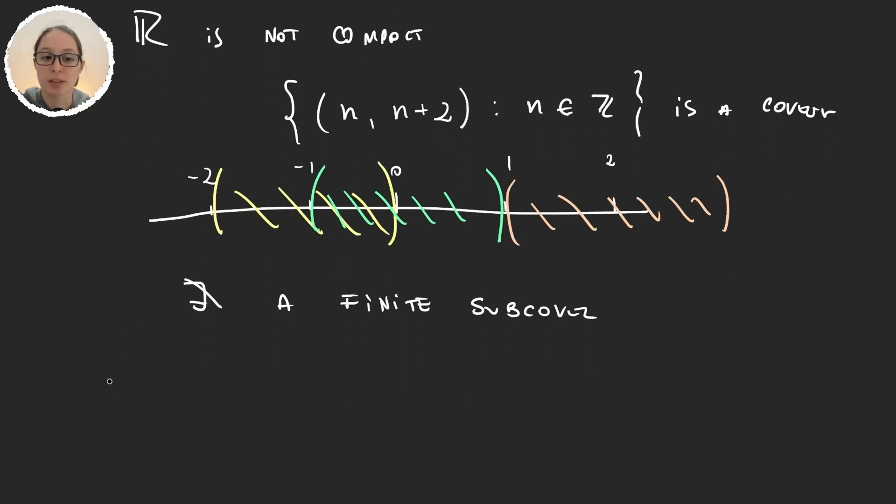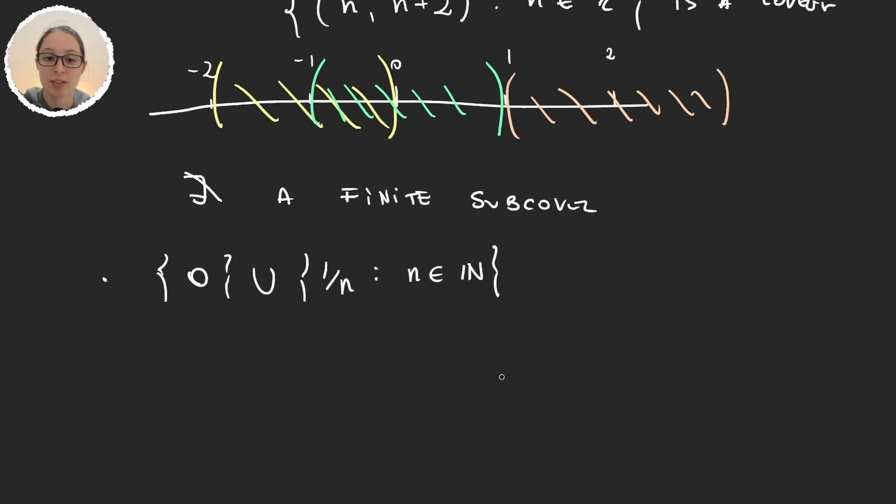Now let's think of an example that is compact. So we can take the zero together with all the numbers of the form 1/n for n natural. This set is something like this: we start at 1, then 1/2, then 1/3, and so on. They are accumulating here, and we added the zero.